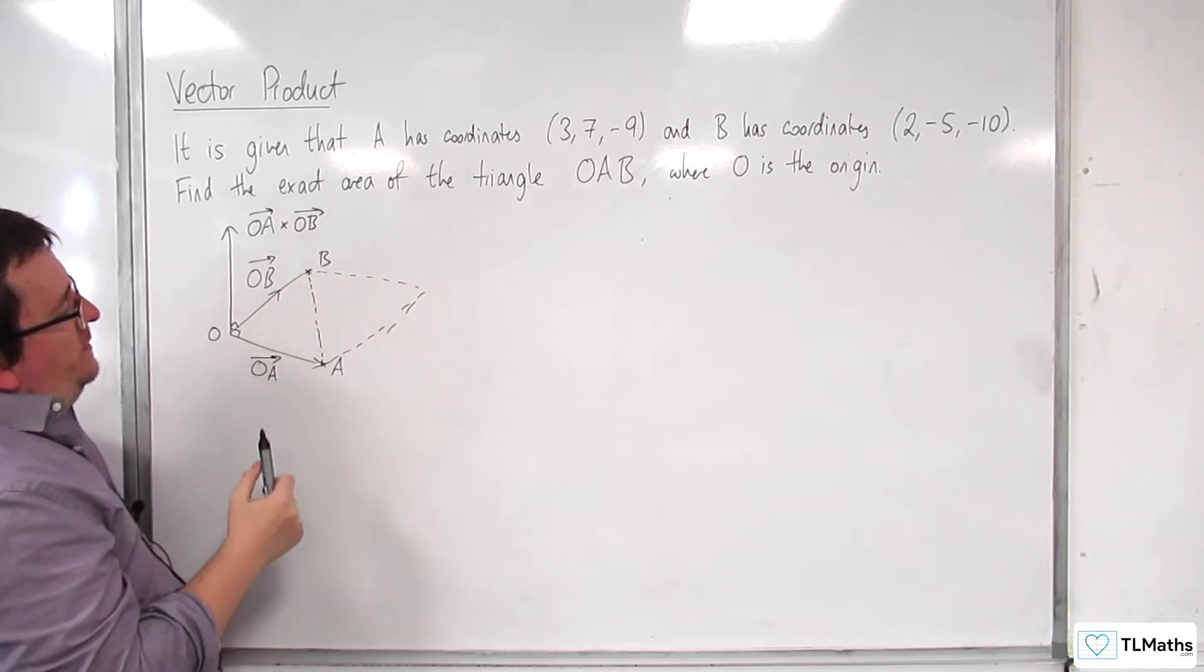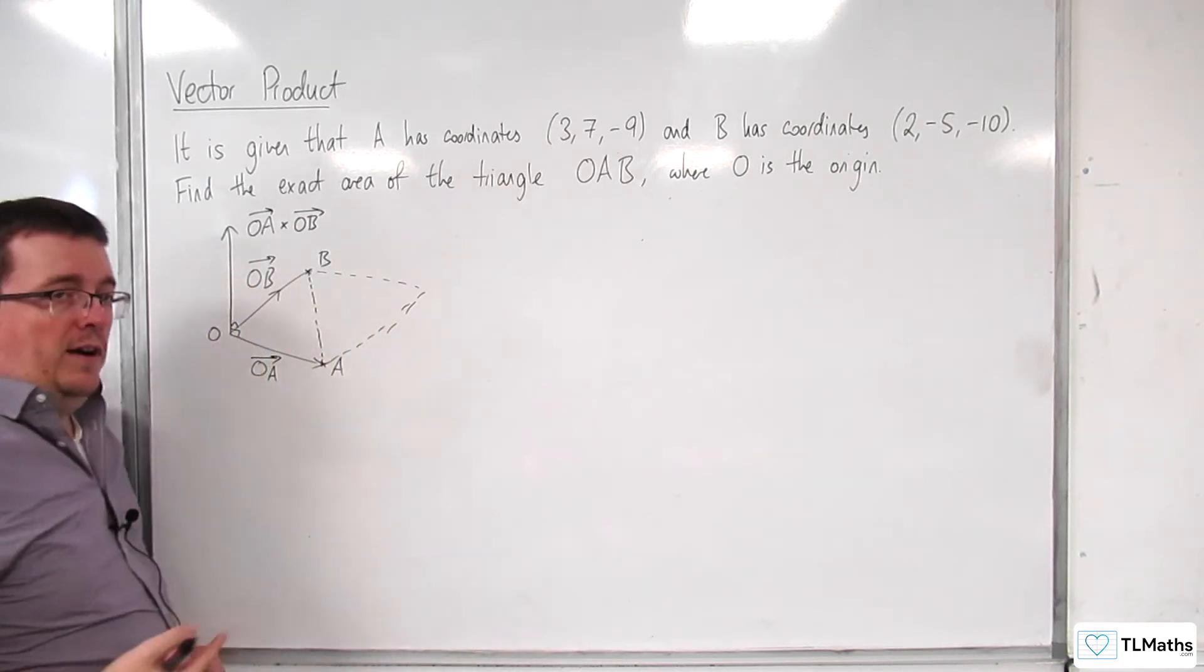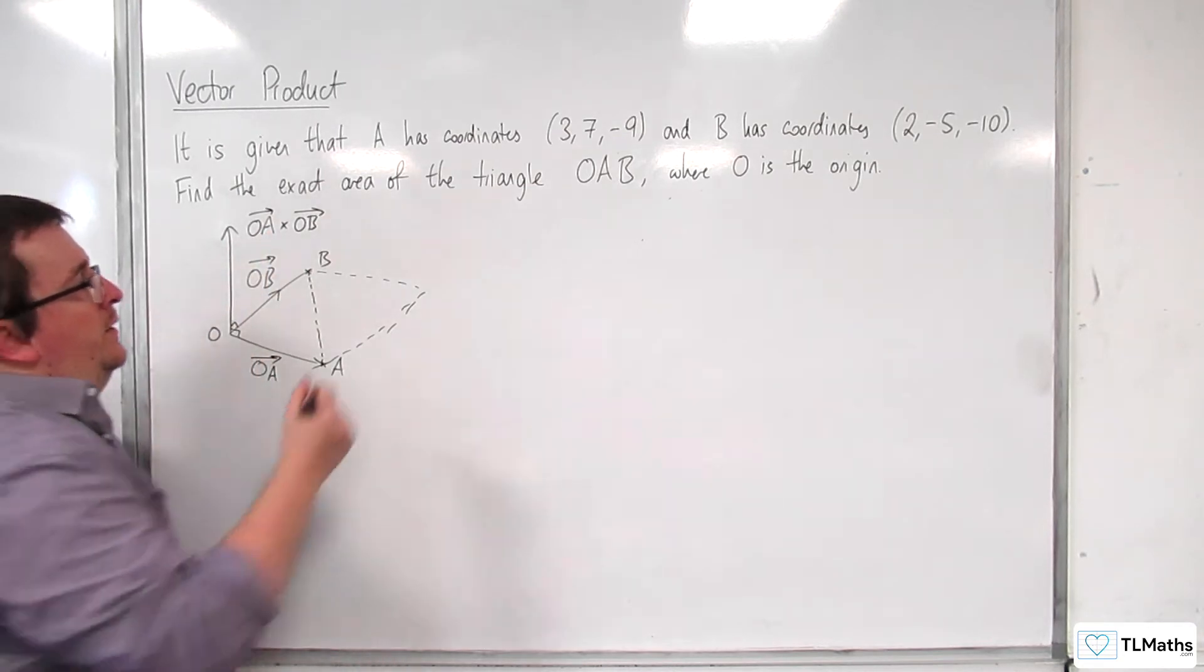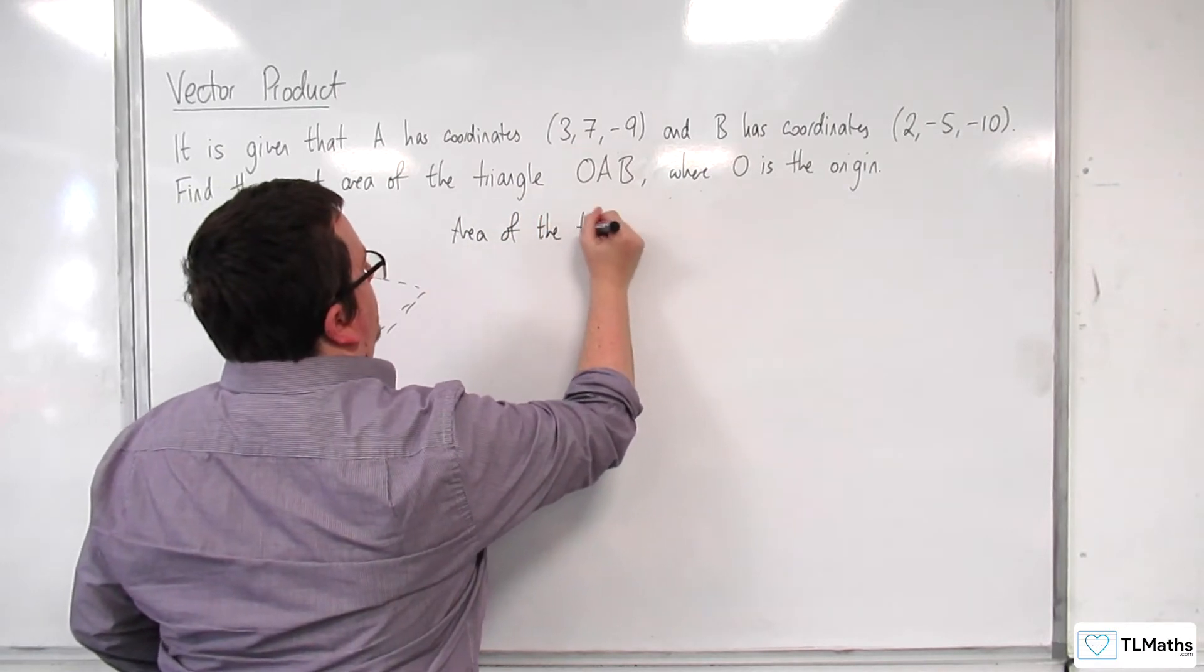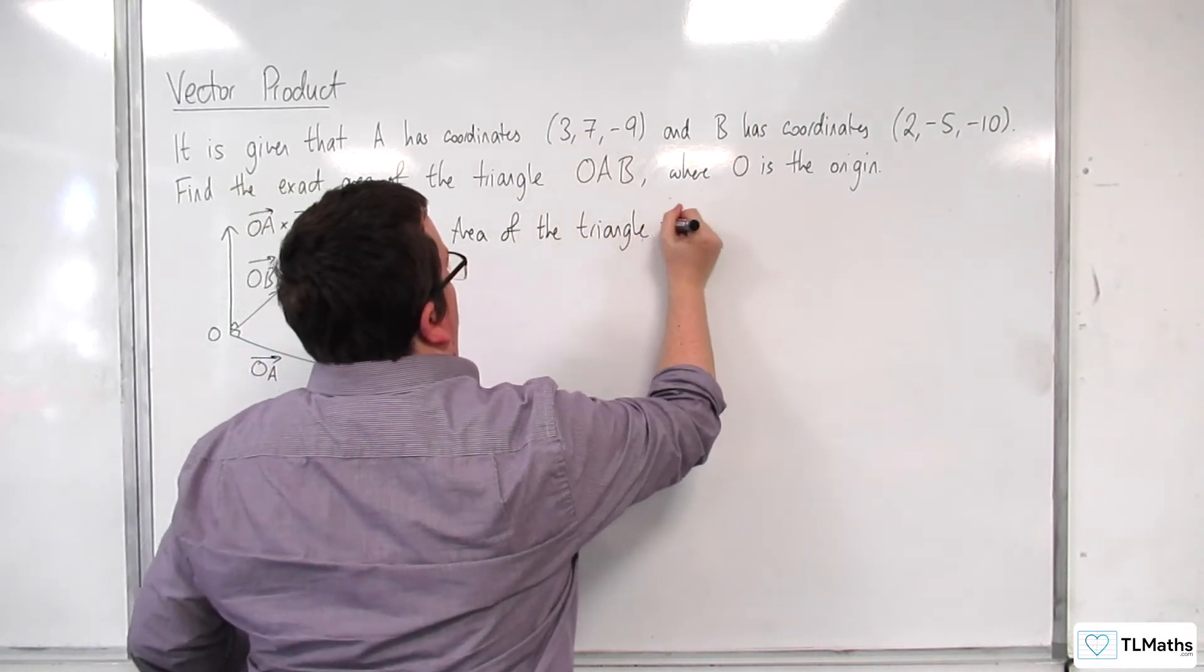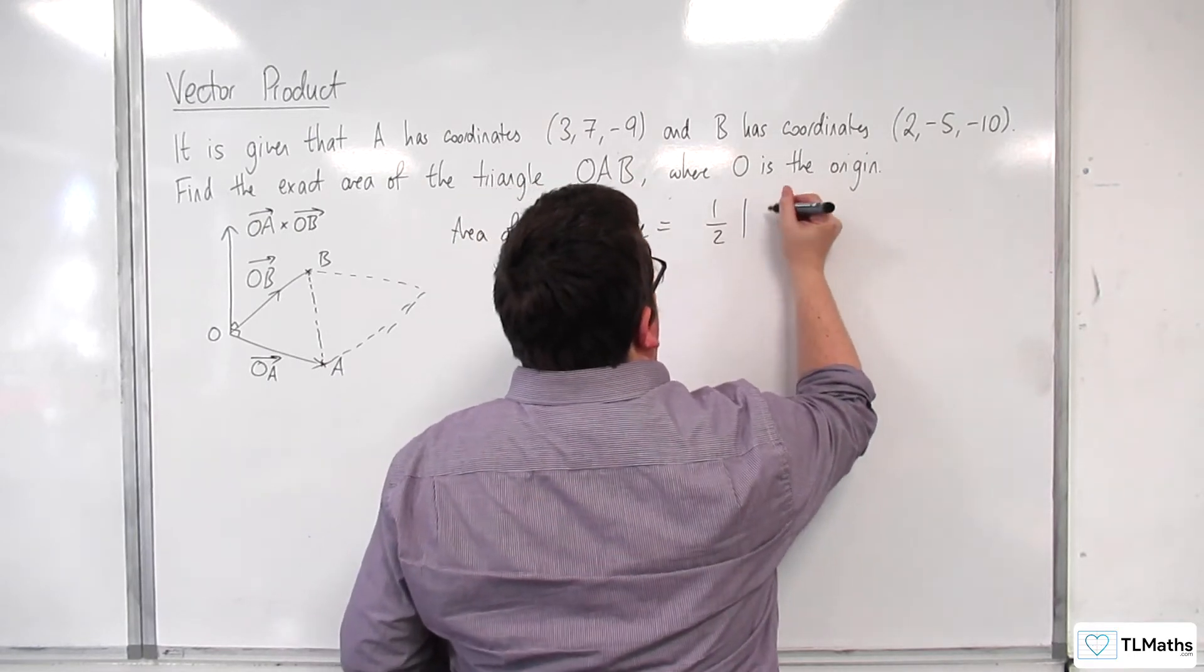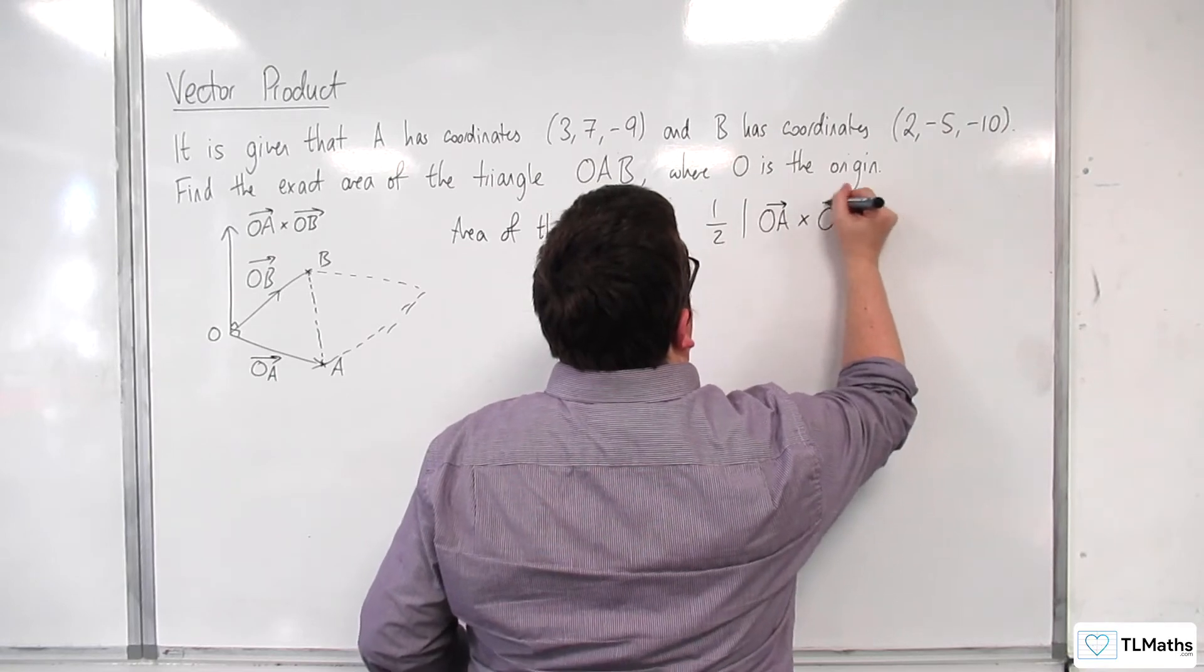And so we're looking for half the length of OA cross OB. So the area of the triangle is going to be equal to one half times the length of OA cross OB.